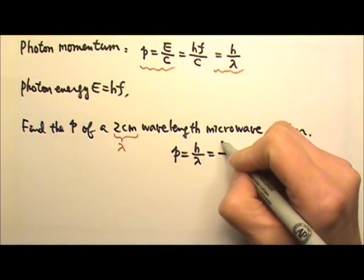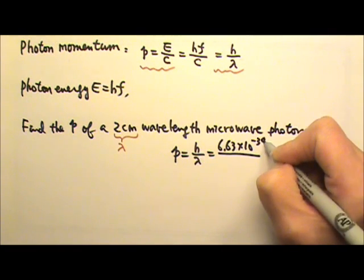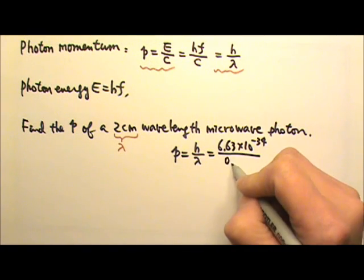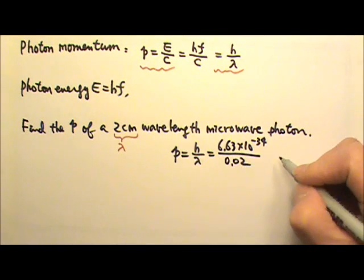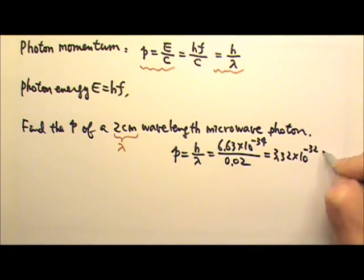So H is 6.63 times 10 to the negative 34th. And the wavelength also has to be in standard unit, so this has to be 0.02 meters. So this gives us 3.32 times 10 to the negative 32.